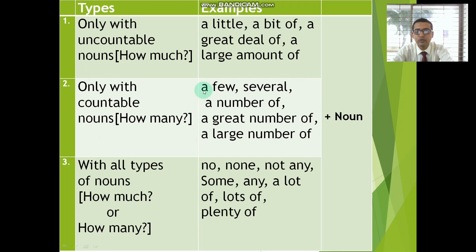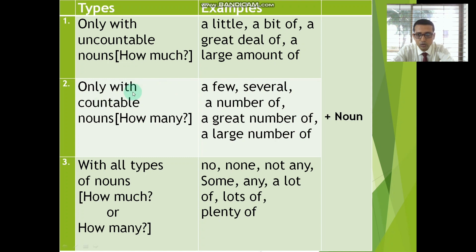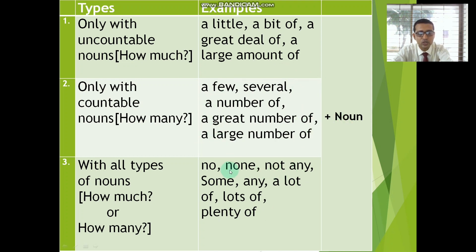There is a table of types and examples. Only with uncountable nouns: a little, a bit of, a great deal of, a large amount of. Only with countable nouns: a few, several, a number of, a great number of, a large number of. With all types of nouns: no, none, not any, some, any, a lot of, lots of, and plenty of — placed just before the noun.